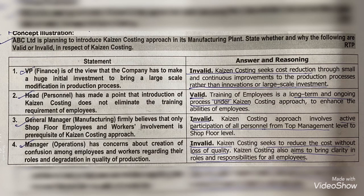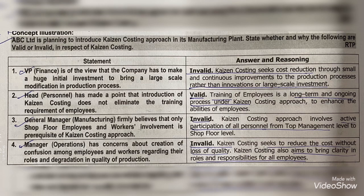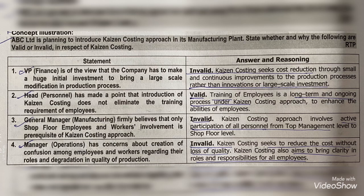Third: The General Manager firmly believes that only shop floor employees and workers' involvement is a prerequisite of the Kaizen Costing approach. This is invalid, because all people — from top management down to the associate and worker level — have to be involved in Kaizen Costing.